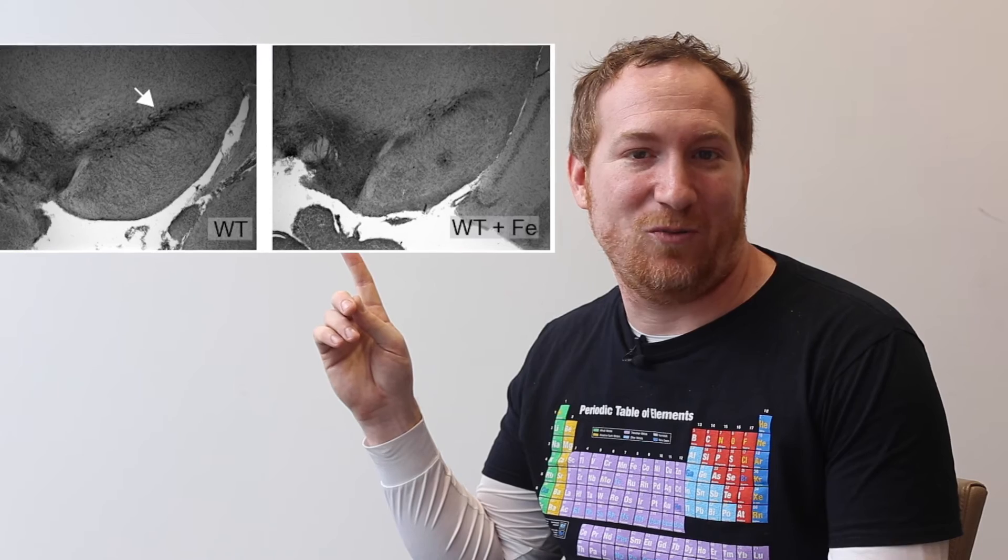Our brains love iron, especially when they're growing. However, its eyes are slightly bigger than its stomach and it's not very good at getting rid of the extra. On average, the amount of iron in our brain increases by about 30% over the course of our lives. And in Parkinson's disease, for some unknown reason, that increase is a bit higher, here in a part of the brain where we really don't want it to be.